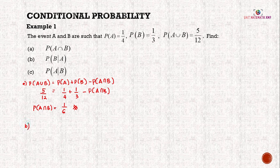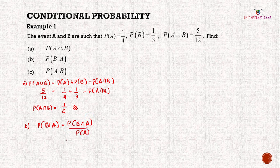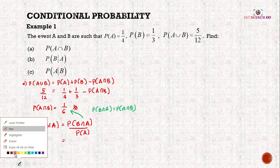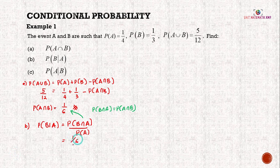Question B asks us to find P(B|A). Using the conditional probability formula: P(B|A) = P(B∩A) / P(A). P(B∩A) equals P(A∩B) from part A, which is 1/6. So we have 1/6 divided by P(A) which is 1/4, and simplifying we get 2/3.